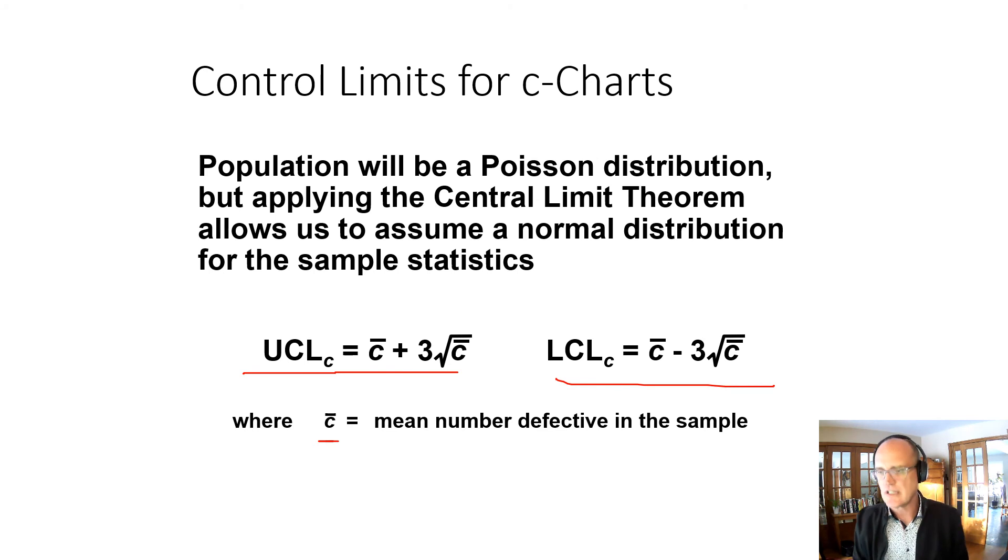So as I said, let's say it was calls into your call center, or complaints into your call center. There are five yesterday, six the day before, and seven the day before that. Then your average would be six, c-bar would be six, your upper control limit would be six plus three times the square root of six, and your lower control limit would be c-bar minus three times the square root of six. Then you would have control limits, and then you would look at the number of calls you have in the next day and in the next day to see if anything's changing.